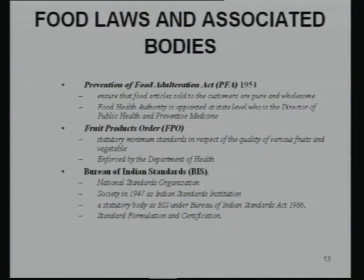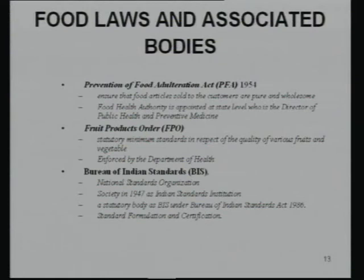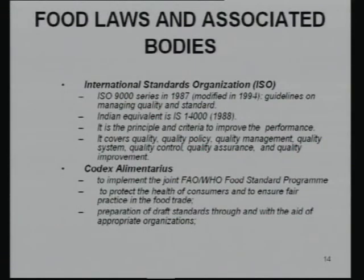The next unit covers food laws and associated bodies. You must know the Prevention of Food Adulteration Act, which ensures food products are safe, pure, and wholesome, with local health authority as the controlling body. Related to fruit and vegetables, there is a food products order. Standards such as Bureau of Indian Standards and international standards like ISO and Codex Alimentarius (from FAO and WHO) must also be known.